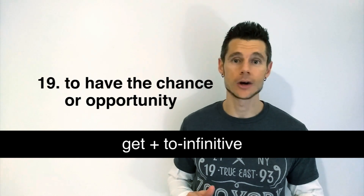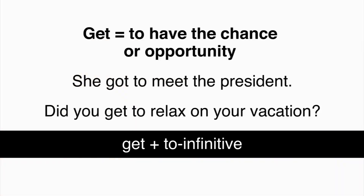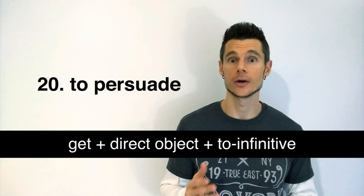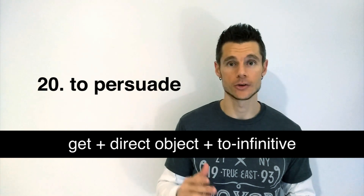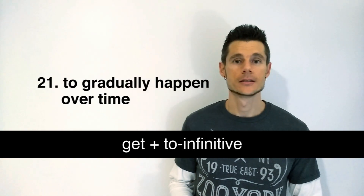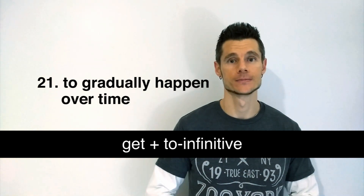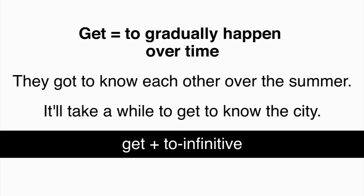GET can mean to have the chance or opportunity. The structure used is GET plus to infinitive. She got to meet the president. Did you get to relax on your vacation? GET can mean to persuade. The structure used is GET plus direct object plus to infinitive. I got my mom to let me go on the trip. The police got the suspect to confess. GET can mean to gradually happen over time. The structure used is GET plus to infinitive. They got to know each other over the summer. It'll take a while to get to know the city.